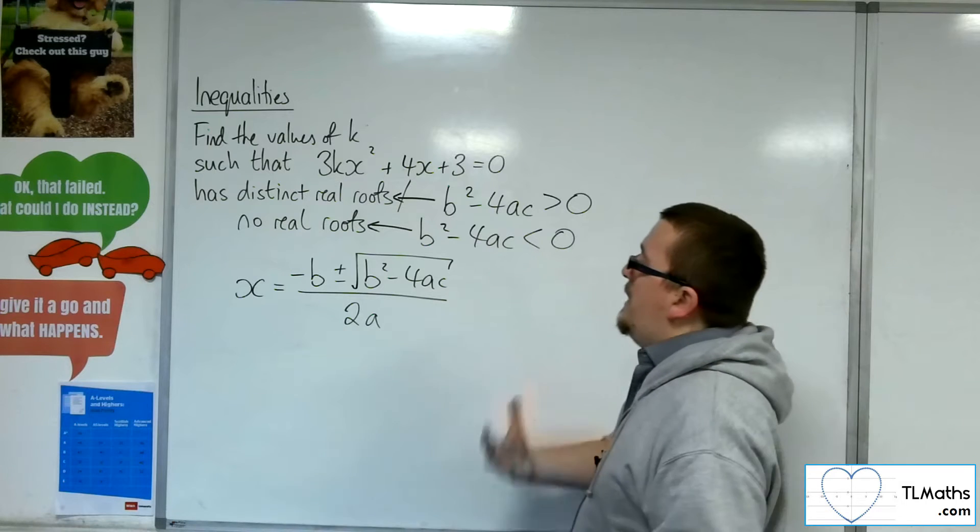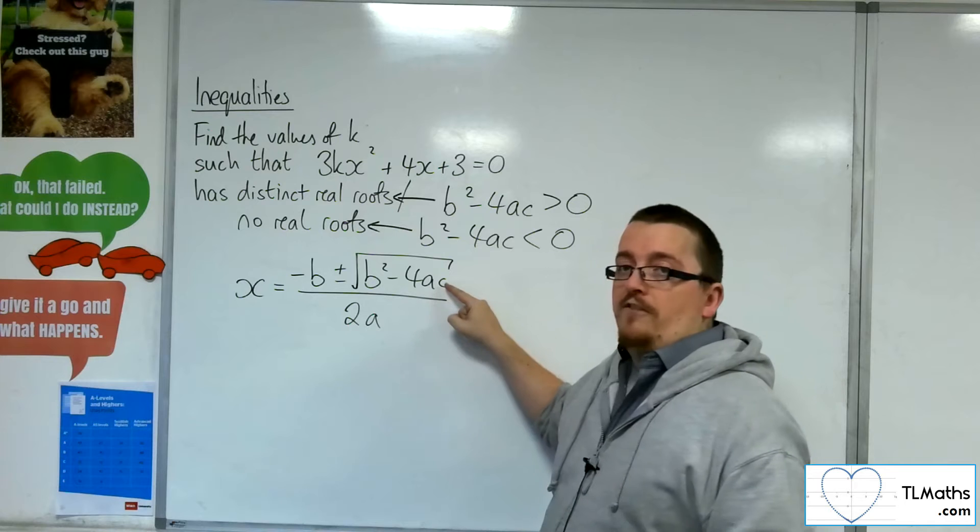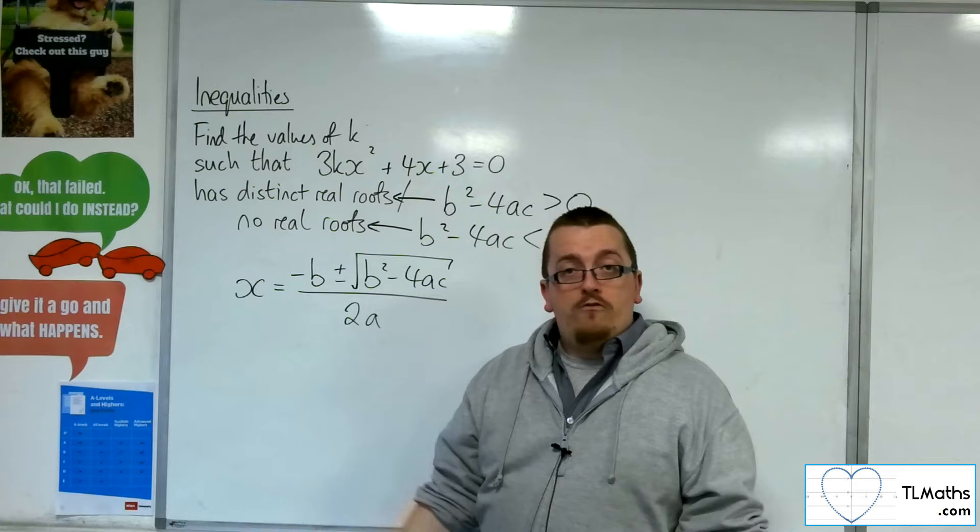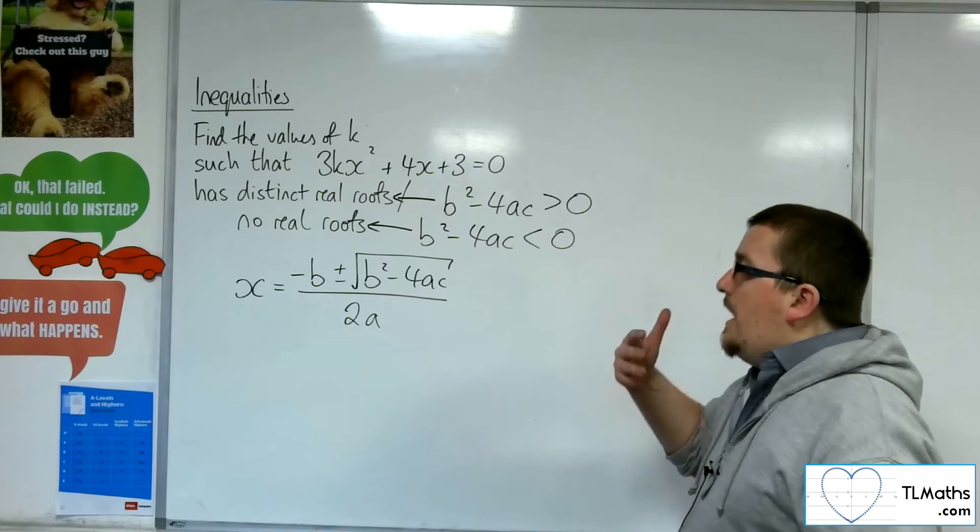So if there were to be no real roots, then the b squared minus 4ac would have to be negative, so that I would be adding and subtracting the square root of something that I cannot square root, so that it breaks.